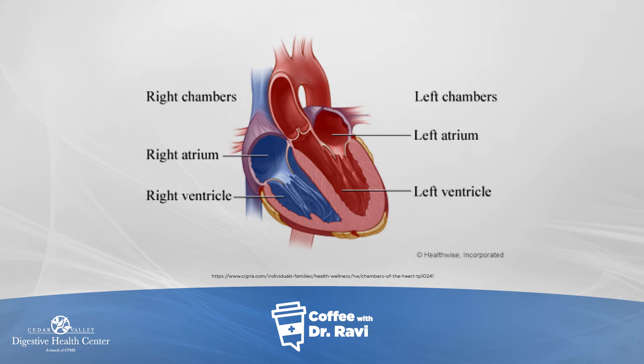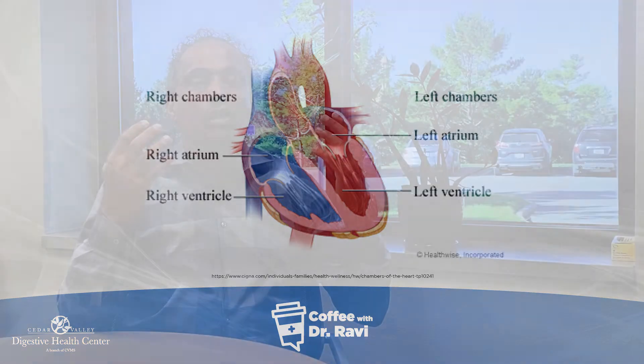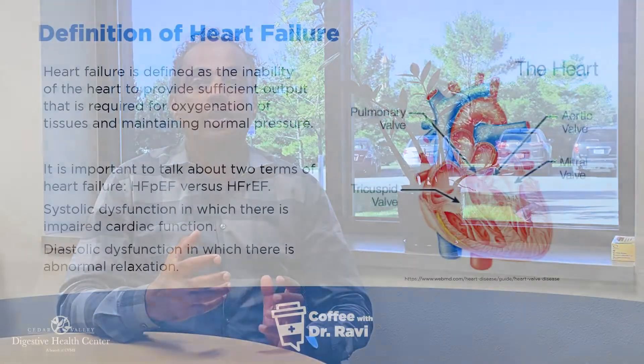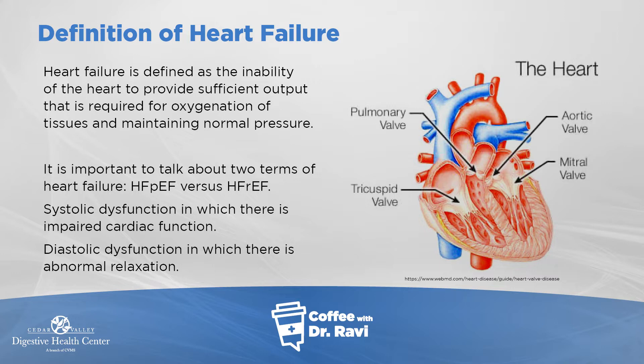It's very intricately set up with four chambers. The top two chambers receive the blood from all over — from the lungs and different areas — and the bottom two chambers then push it out. This pushing out is referred to in medical terms as ejection fraction.